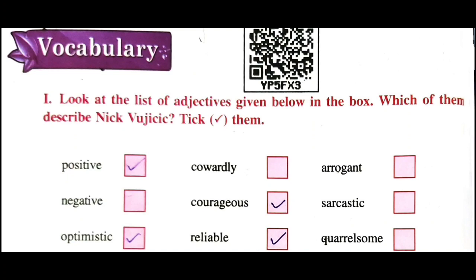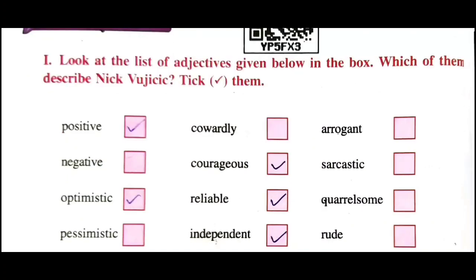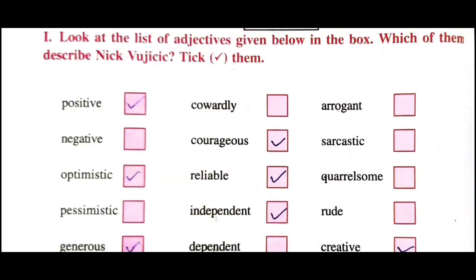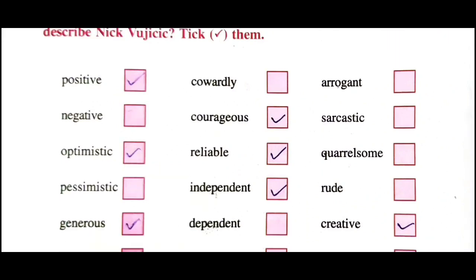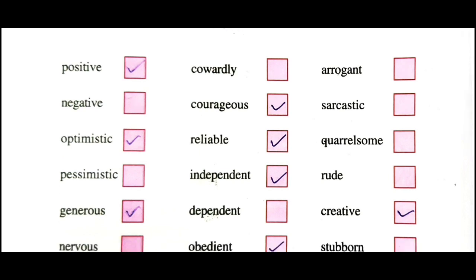Textbook page number 8: Look at the list of adjectives given below in the box. Which of them describe Nick? Tick them. These are the good qualities and bad qualities. For each word, if Nick has that quality, put a tick mark. So looking at the first quality: Nick has a positive attitude, he is of a positive nature, so give the tick mark to 'positive.'